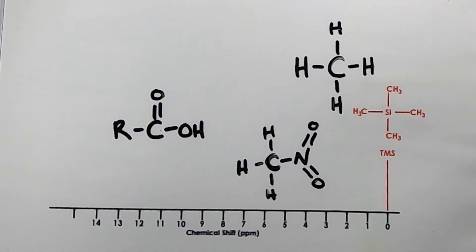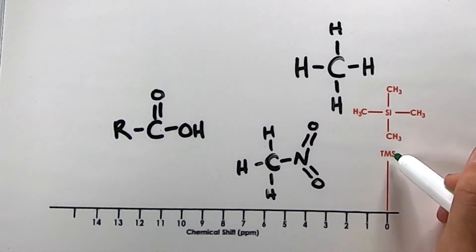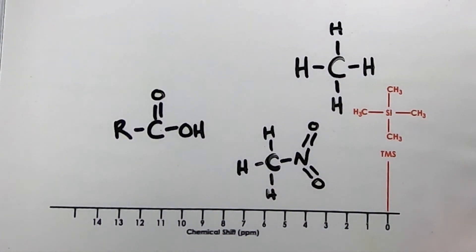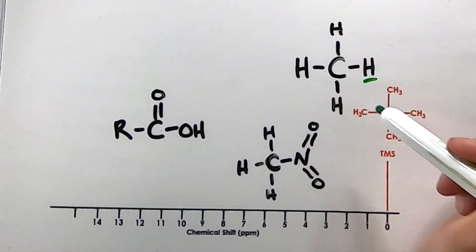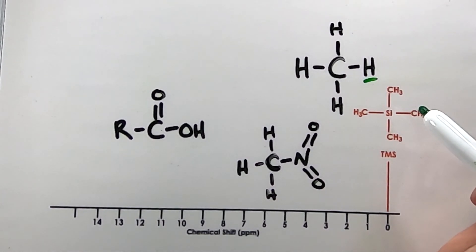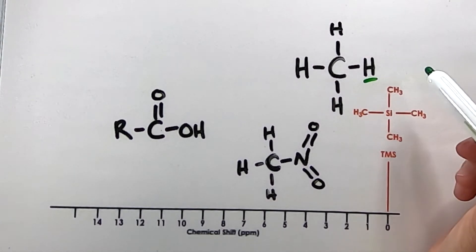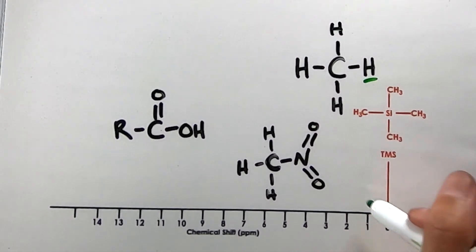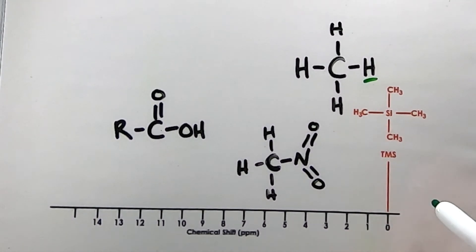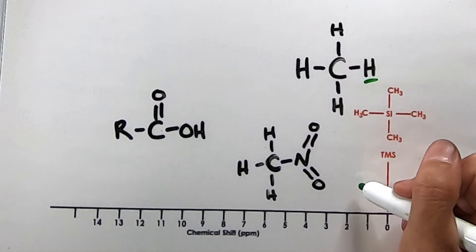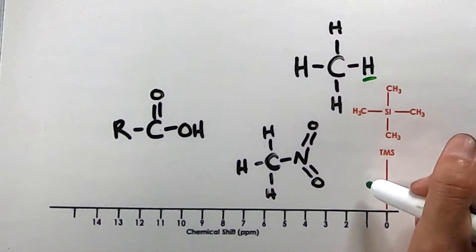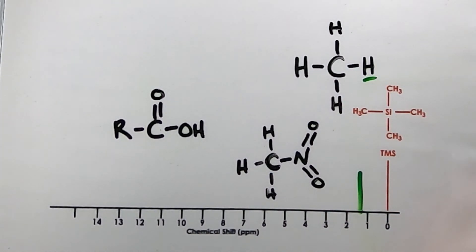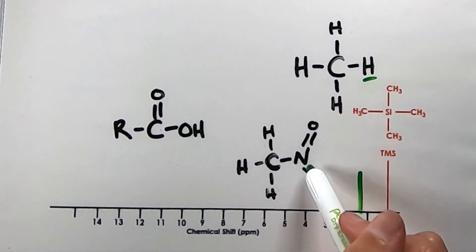Here's the HNMR spectrum graph. I included the TMS peak just for reference, and I drew the three molecules we compared. We learned that the hydrogens on methane were the least deshielded because there were no functional groups with more electronegative atoms than carbon. So we should expect to find a peak for these hydrogens somewhere more upfield, meaning closer to zero — indeed, somewhere between 0 and 2 — and it will be one peak since these four hydrogens are equivalent.